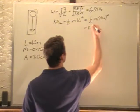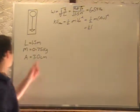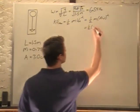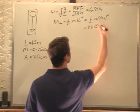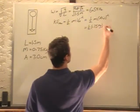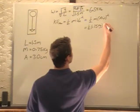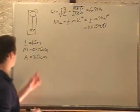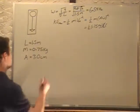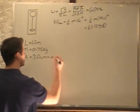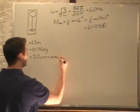So now we can just plug in what we know, 1/2 our mass, which is 0.75 kilograms, times amplitude of 7 centimeters. And if we put that in meters, it's 0.070 meters.